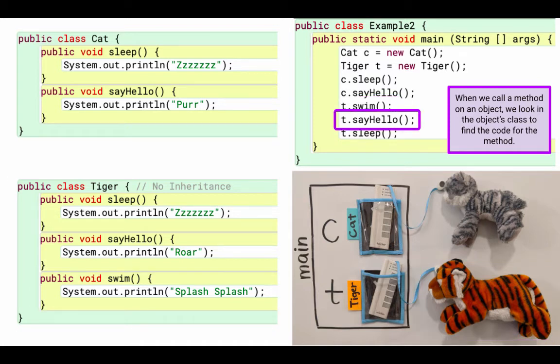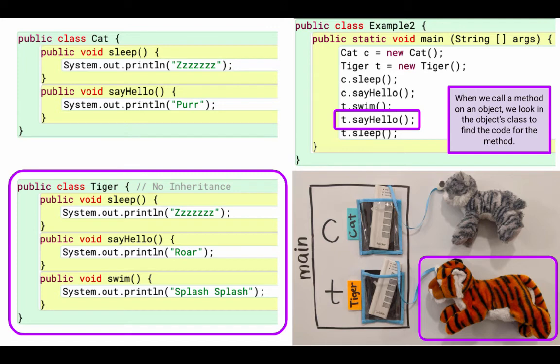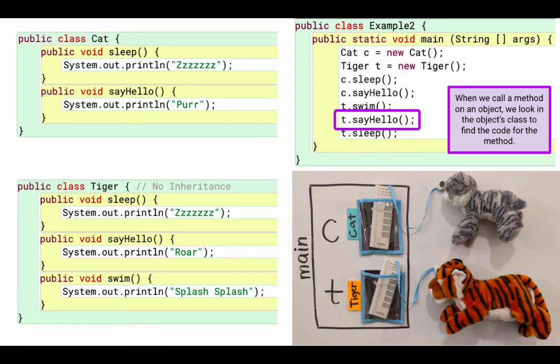So we're going to execute t.sayHello. t references that tiger on the bottom right. So because we're calling the method on the tiger, we're going to look in the tiger's class for that code. We look in the tiger's class, we find it in the sayHello method inside the tiger's class, and it prints roar. Okay, we've finished executing t.sayHello.